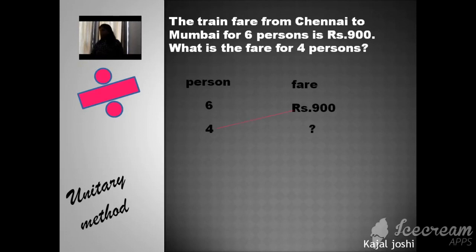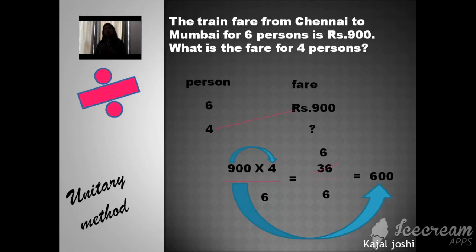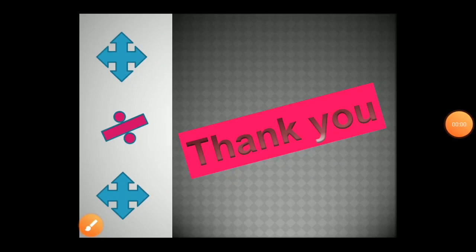First you do cross multiplication. 4 multiply 900 and divide by 6. So easy method, first multiply 9 into 4. So answer is 36 and divide by 6. So 36 divided by 6 is 6. So here 900 has 2 zeros. So we write 2 zeros right side of 6. So answer is 600. So the charge for 4 persons is 600. So answer is Rs. 600.